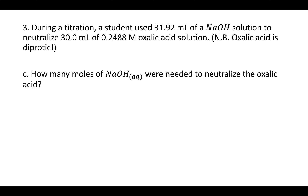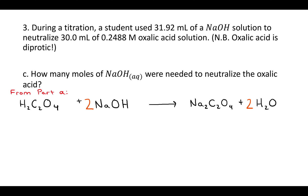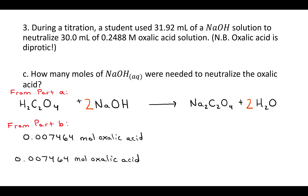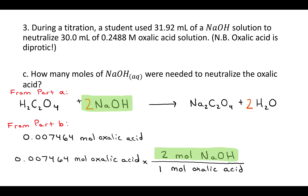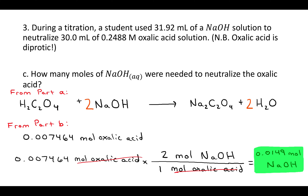Part C says how many moles of sodium hydroxide were needed to neutralize the oxalic acid? From part A we have the balanced equation, so we can relate moles of oxalic acid to moles of sodium hydroxide. From part B we have 0.007464 moles of oxalic acid. Using the coefficients from the balanced equation — for every one mole of oxalic acid there are two moles of sodium hydroxide — moles of oxalic acid cancel and we get 0.0149 moles of sodium hydroxide.